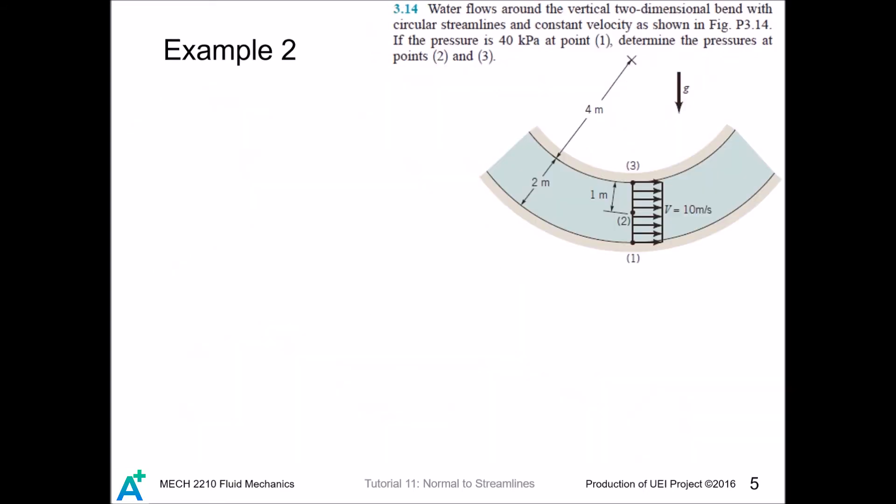We do the next example. Let's set the r direction like this. If we set our reference as point 1, we have p minus p1.